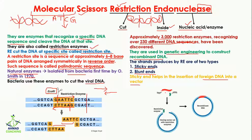Sticky ends are very helpful in the insertion of foreign DNA into a vector. The red part here is our gene of interest — you can see the free nucleotides, which are the sticky ends. We cut the DNA with restriction endonuclease to get these sticky ends. Similarly, we use restriction endonuclease to cut our vector, which also has sticky ends. These two sticky ends combine and ligate with each other, inserting the foreign DNA into the plasmid to form recombinant DNA.